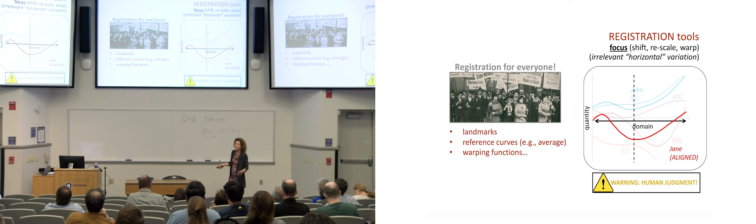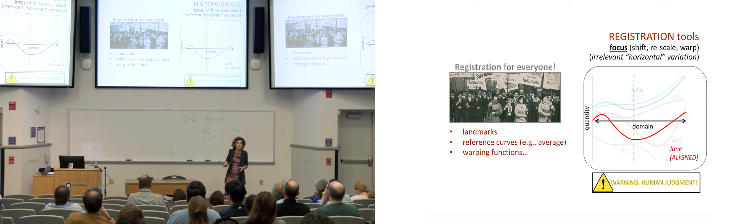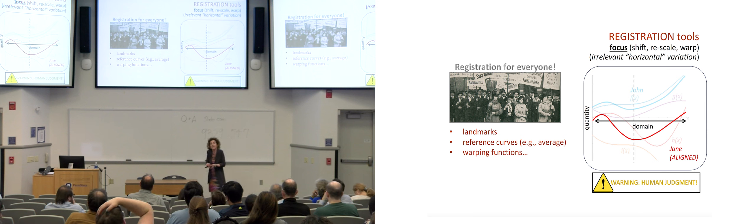Also here, of course, we are registering everybody, not just Jane. And people register using landmarks, which is the intuition I was trying to draw upon here. But people also register trying to get as close as possible to a reference curve. For instance, the average curve or a principal component curve. Warping functions are a registration tool particularly beloved by functional data analysts. Also here, like for the smoothing, there is a warning concerning human judgment because we need to decide what is it that is relevant and what is it that is not.